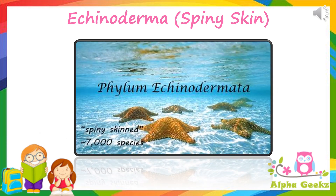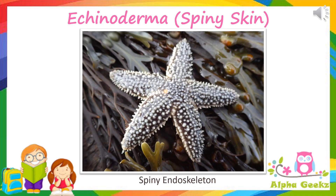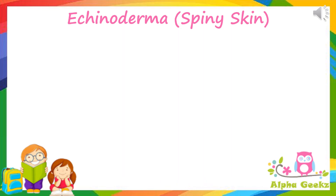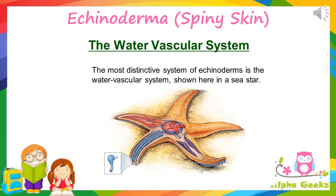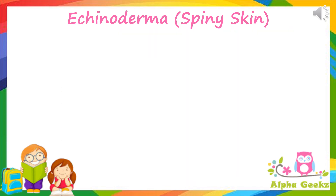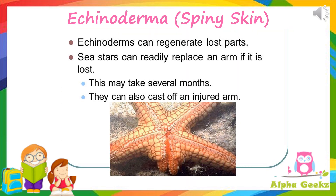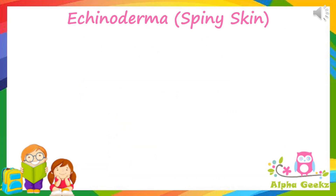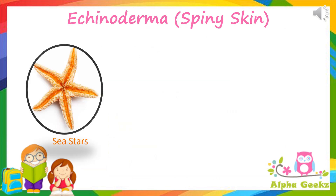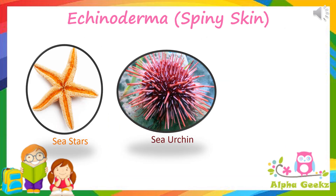Echinoderms: echinoderms are marine invertebrates. They have a spiny endoskeleton, meaning they have spines or bumps covering the outer surface of their bodies. They have five-sided radial symmetry and a water vascular system with tube feet. Echinoderms can regenerate their body parts. Examples include sea stars, sea urchins, and sea cucumbers.